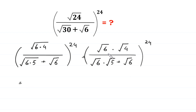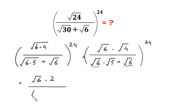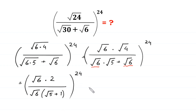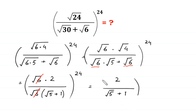Next, square root of 6 times square root of 4 equals square root of 6 times 2, divided by — from here we can factor out square root of 6 as a common factor, leaving square root of 6 times (square root of 5 plus 1), whole to the power 24. This square root of 6 cancels with the square root of 6, and we are left with 2 divided by (square root of 5 plus 1), whole to the power 24.